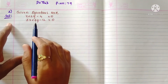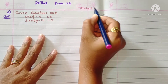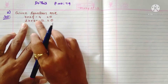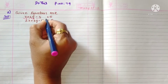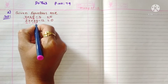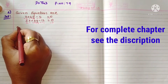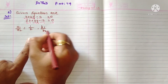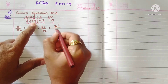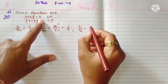First of all, we have to arrange the equations in the form ax plus by plus c is equal to zero. These are already in that form. Now compare with a1x plus b1y plus c1 equals zero and a2x plus b2y plus c2 equals zero. Write a1 by a2: a1 is 1, a2 is 2. Similarly, b1 by b2: b1 is 2, b2 is 4, so that is one by two.